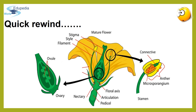Here, as you can see, it is the structure of a complete flower, also called a perfect flower, a bisexual or a hermaphrodite flower. A complete flower comprises all four whorls, i.e. calyx, corolla, androecium and gynoecium.